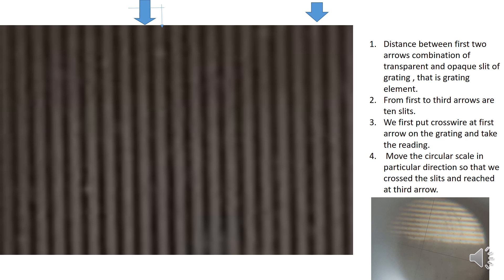First of all, we have to measure the grating element. You can see this is the transparent portion and this is the opaque portion of the grating. We will try to find the distance from the start of one opaque portion up to the end of the next transparent portion — that is one combination, also called the grating element.